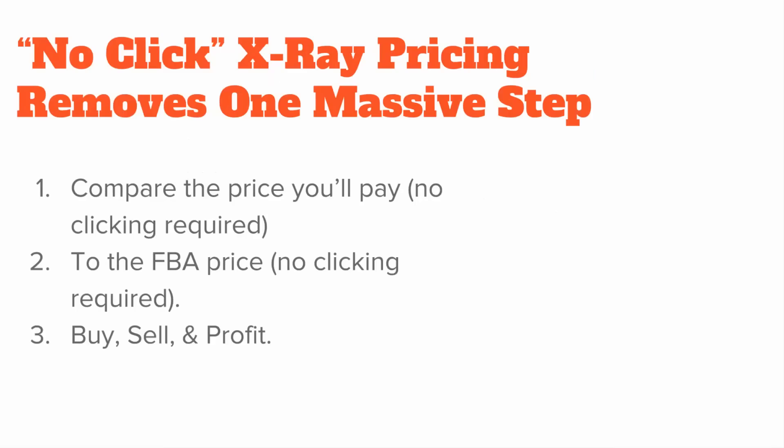We don't play those games. Our new no-click x-ray pricing technology removes a massive step between getting started and making money. You simply look in Zen Arbitrage after you do a search — you look at the price you're going to pay, which is the total price, shipping included. Then you compare it to the FBA price, which we also display. No clicking required. And then you simply buy, sell, and profit. It is as simple as that.